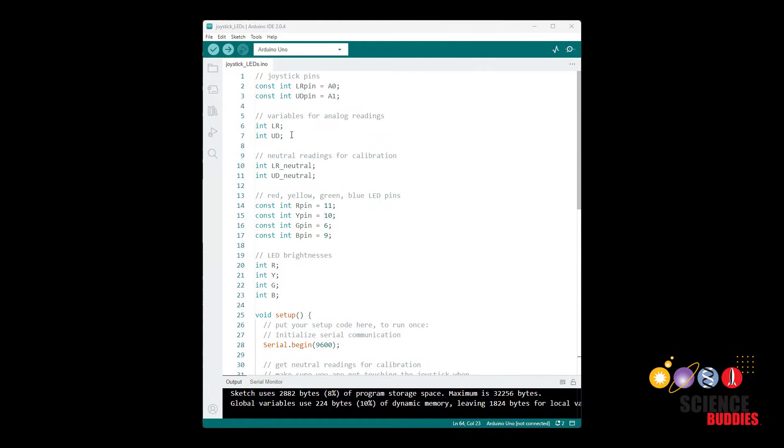Here we have the modified code where I still have my variables for the joystick but I've added some new variables. So I have new variables for that neutral or center reading which I'm going to use to calibrate my joystick and I have a bunch of variables for the LEDs. So I have one pin for each LED and then I'm going to have a brightness variable for each LED.